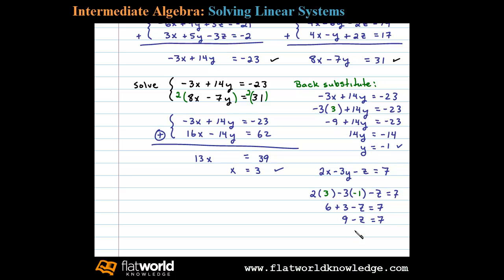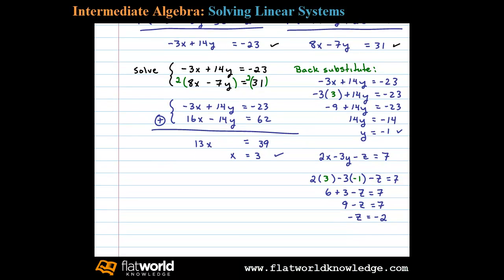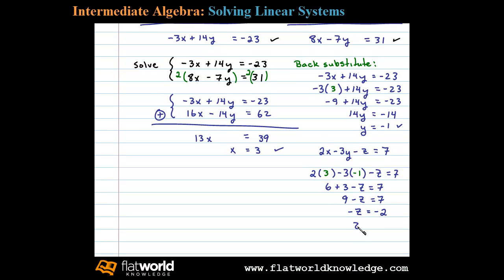Subtracting 9 from both sides, we're left with negative z equals negative 2, or z equals 2. All that's left is to present our solution as an ordered triple: the simultaneous solution is 3, negative 1, 2.